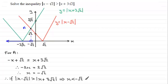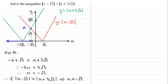Now I said there was another way to do this inequality. It's not a way you can always apply, but you can do it in this question because we have two terms each with a mod sign around them, so they're both going to be positive. When this happens, we can square both sides and keep the inequality sign.